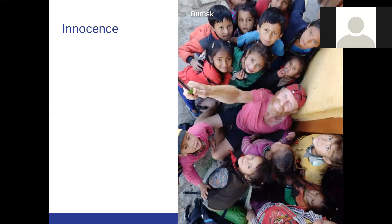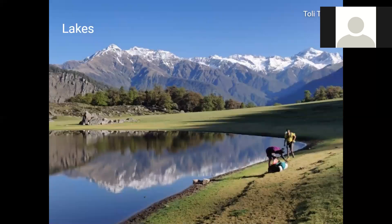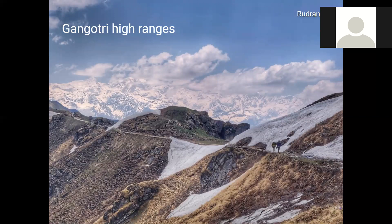Dumak was the last village before getting back into the forest towards Rudranath. Whenever you arrive in these villages, the kids are so energetic and innocent — they run towards any visitor because very few outsiders ever come to these non-touristic places; nobody crosses these passes even though clear trails connect the villages. After climbing up towards the Rudranath side, you come across beautiful lakes where the high Gangotri ranges are reflected in the open meadows of Tolidal — a bit semi-touristic, with one local providing food to hikers.